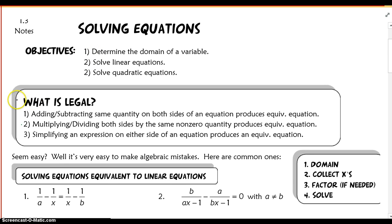So the first thing I want to talk about and discuss is what's legal. You guys are familiar with the golden rule in math, and that's to do unto one side of an equation what you would do unto the other. So we can always add or subtract the same quantity on both sides of an equation. We can multiply or divide on both sides of the equation. And we can also simplify an expression on either side of the equation that will produce equivalent equations.